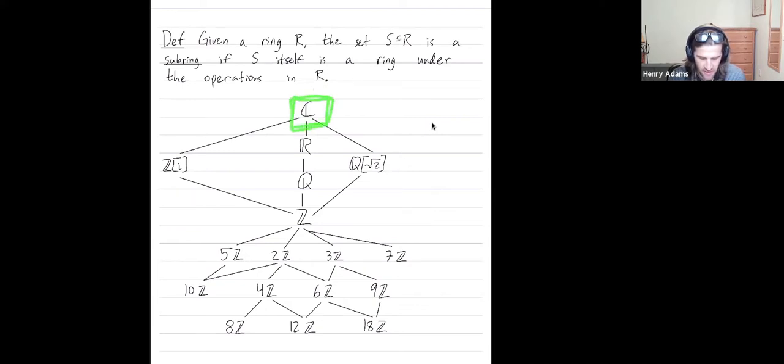The complex numbers, think of this as our ring R. It's a pretty large ring by some notions of large. Below the complex numbers, I've drawn various subrings. So all of these are subrings of the complex numbers. You can see I'm using this definition of ring where we don't need multiplicative identities. So none of these rings have a multiplicative identity.